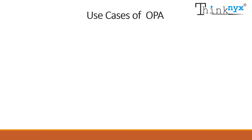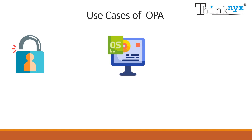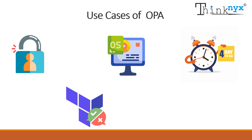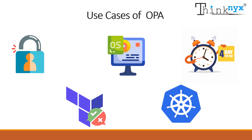Let us see some scenarios where OPA could be used: who has access to which resource; the capabilities of the operating system on which a container can run; at what time of the day the system may be accessible; allowing or denying Terraform changes based on compliance or safety rules; and enforcing Kubernetes admission controllers to validate API requests.